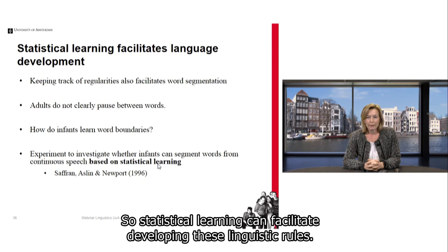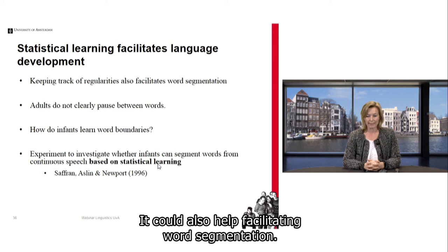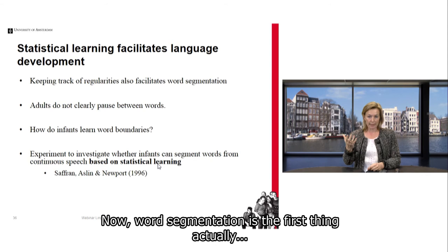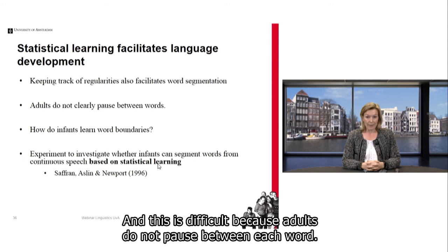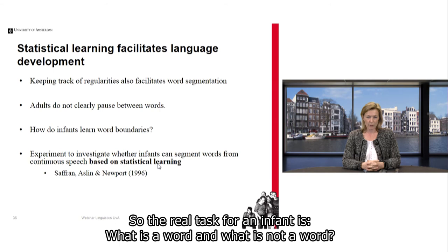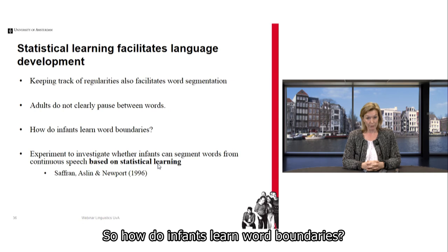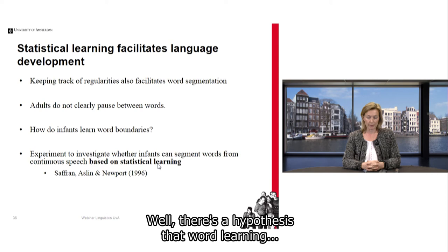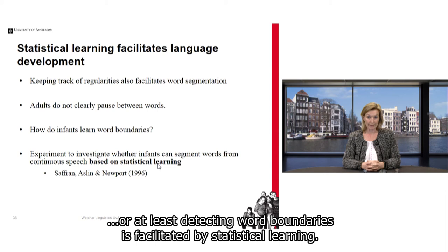Statistical learning can facilitate developing linguistic rules and also help with word segmentation. Word segmentation is the first thing infants have to do when they are born, and it is difficult because adults do not pause between each word. The real task for an infant is: what is a word and what is not a word? There is a hypothesis that detecting word boundaries is facilitated by statistical learning.